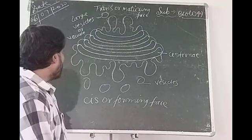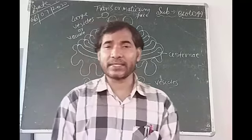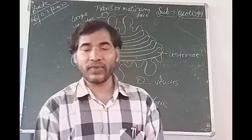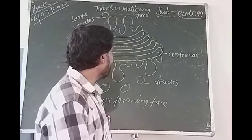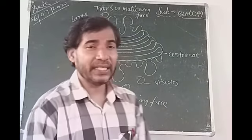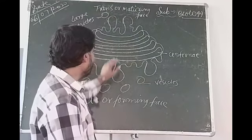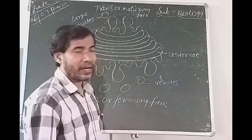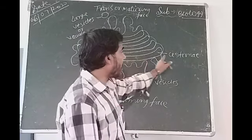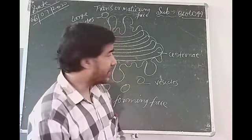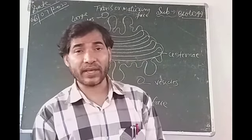Now we will see about the structure of Golgi apparatus. Golgi apparatus is made of cisternae, vesicles, and vacuoles. In Golgi apparatus, many flat tubular structures are present which are parallelly arranged from one another. These flat tubular structures are called cisternae.